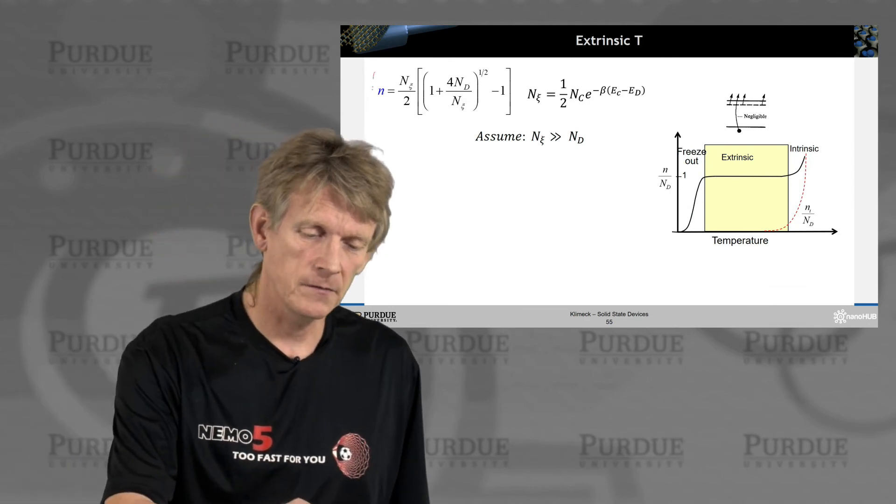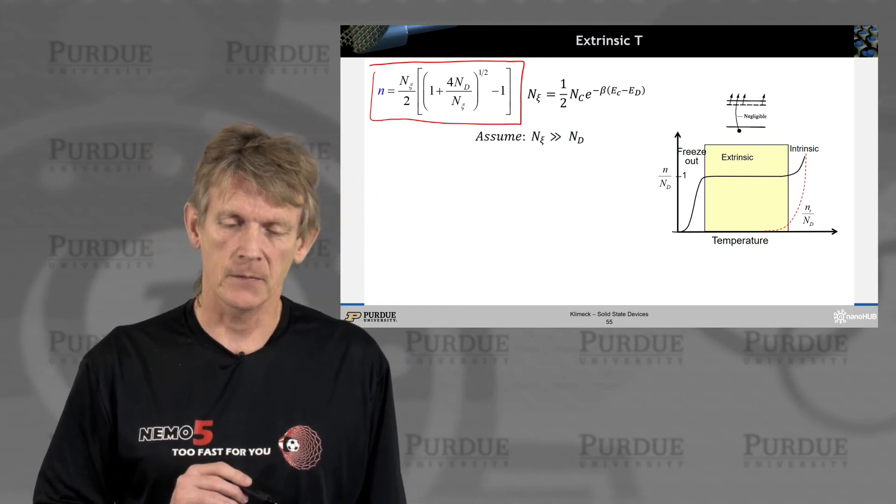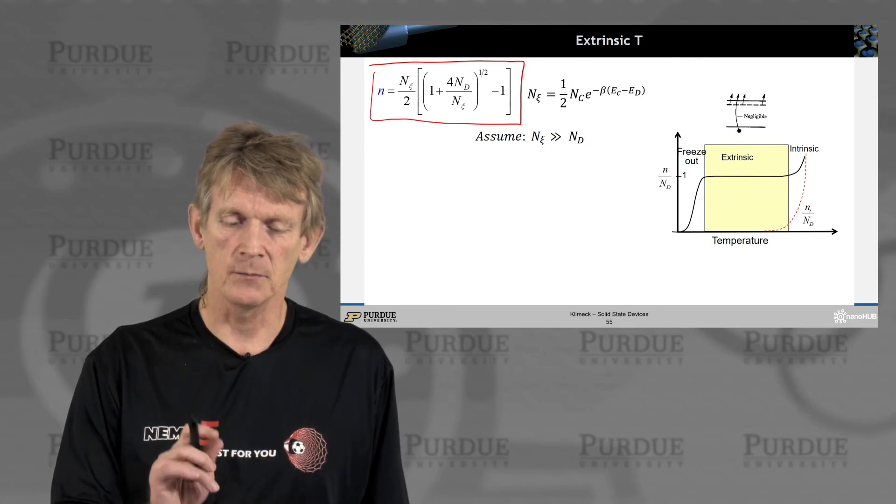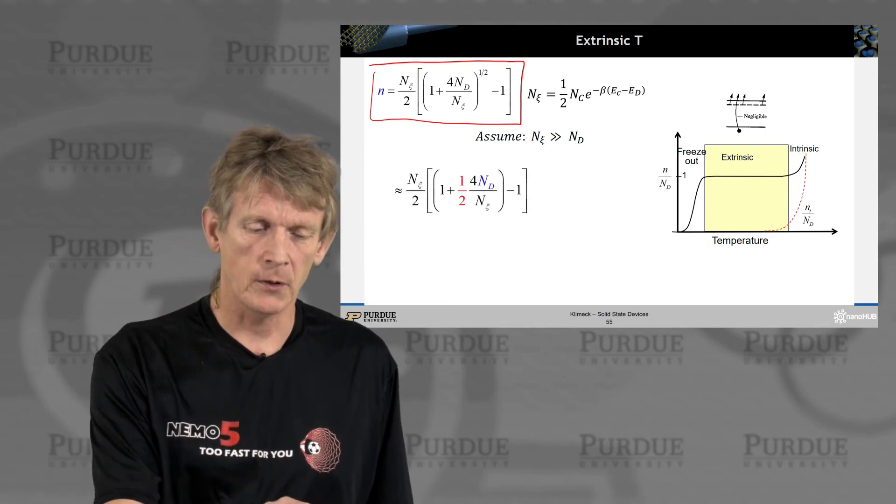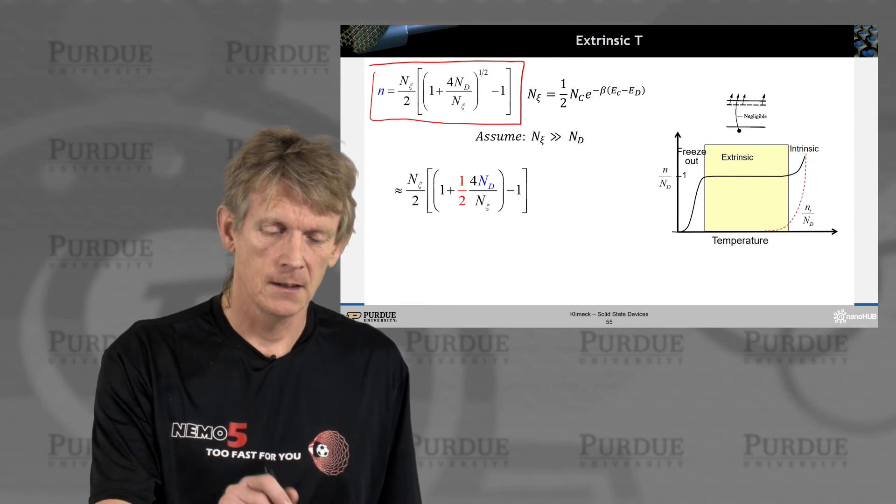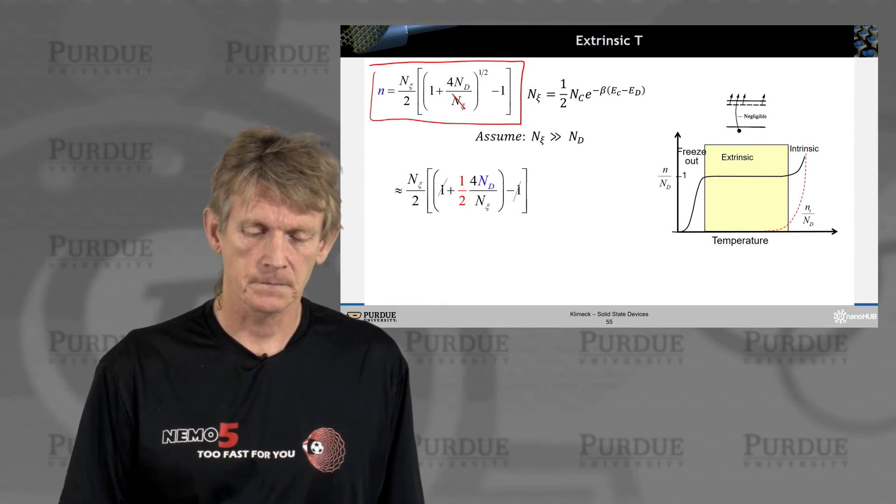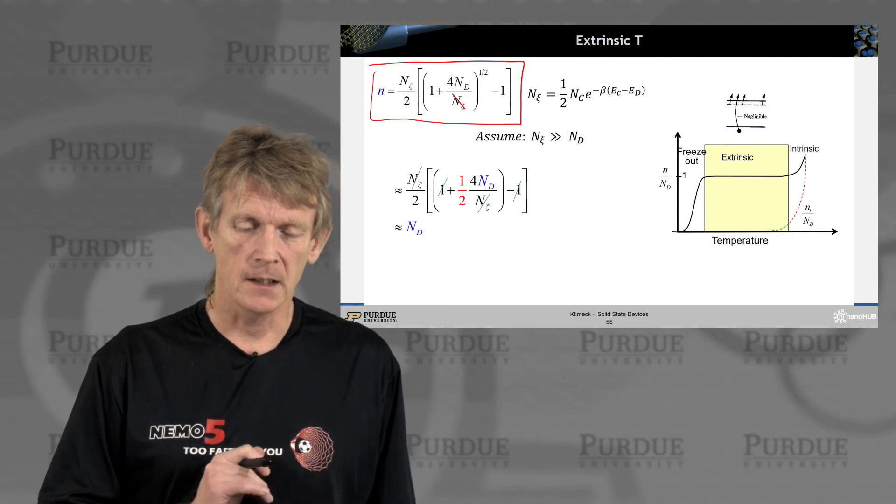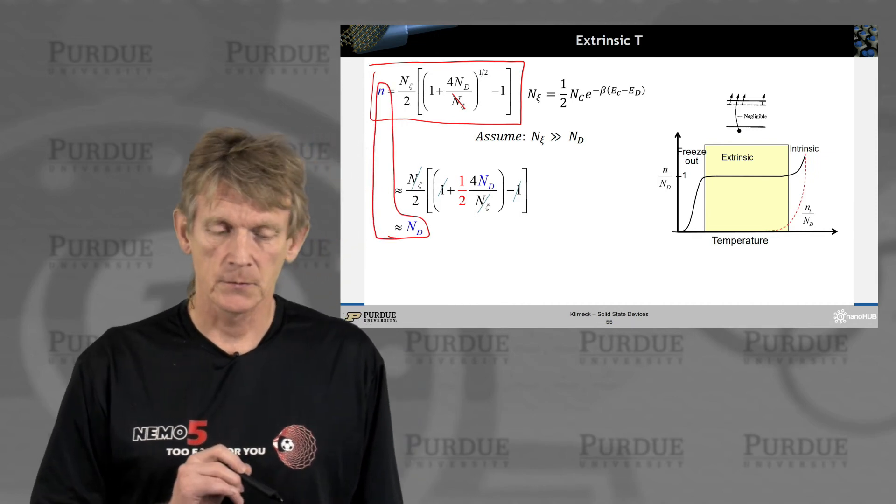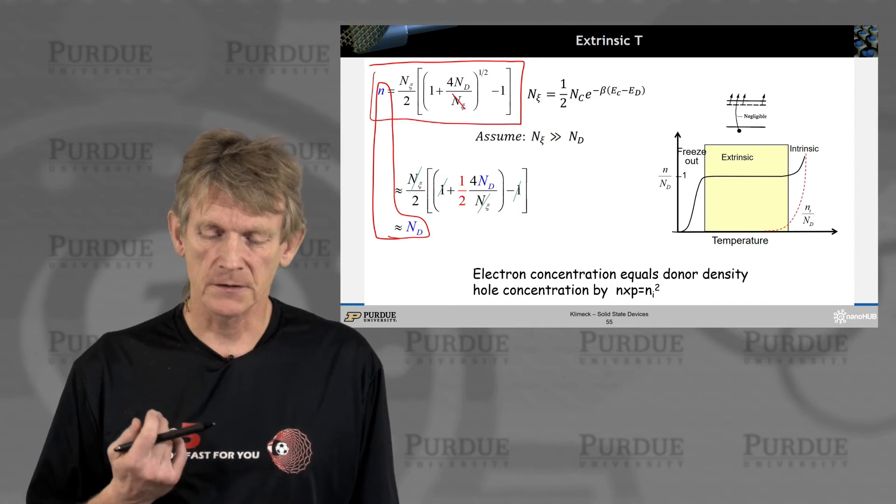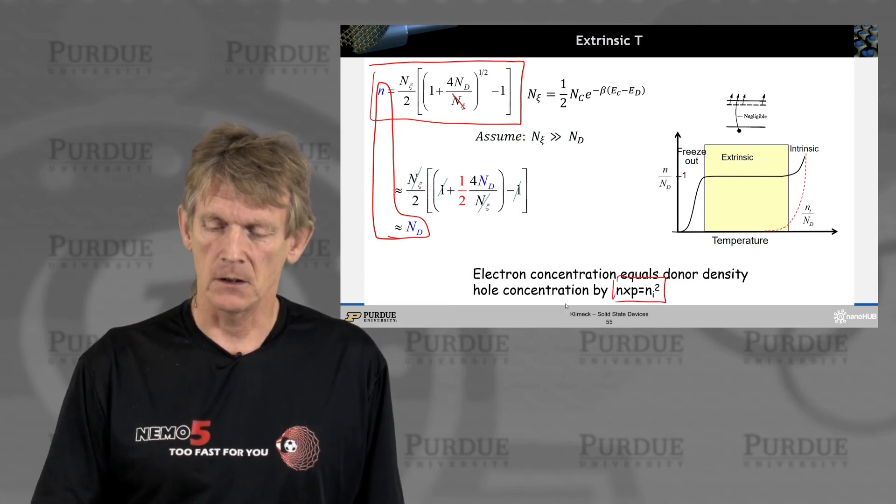Now, let's look at this expression of n as a function of n psi. And let's assume that n psi is much larger than the donor density. If that's the case, we can multiply this through here. So this guy is going to cancel out here with this guy, and we have an n psi over half. And we end up with that n is roughly the number of donors. So the electron density concentration equals the donor density, and we can get the hole density from the mass action law.